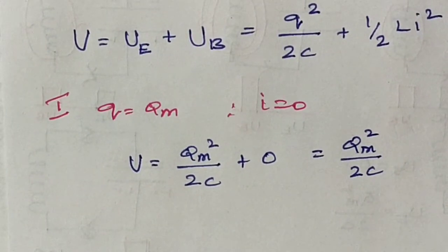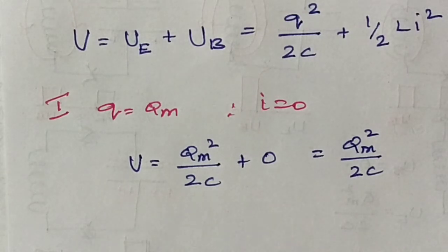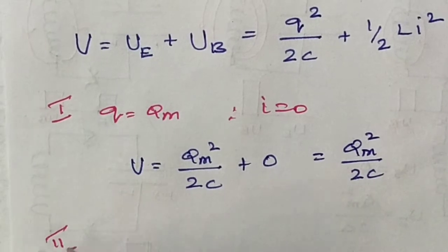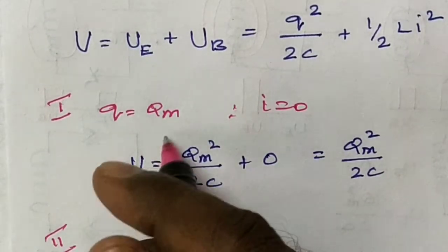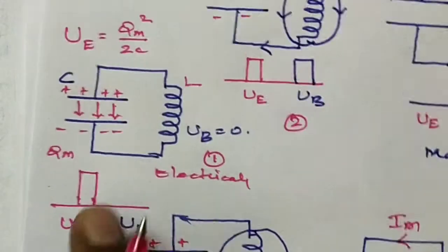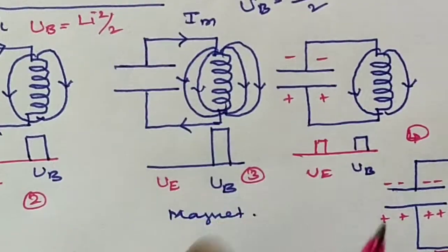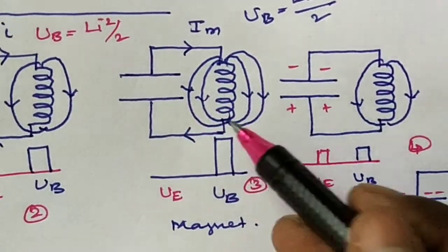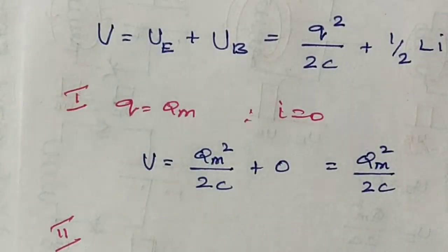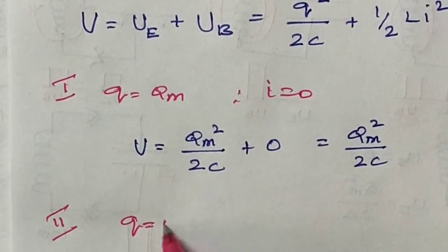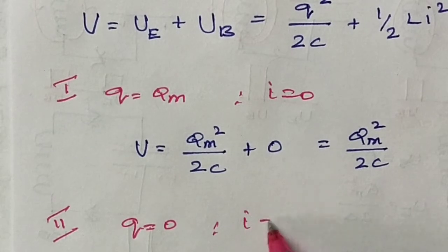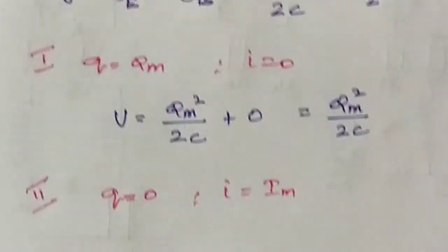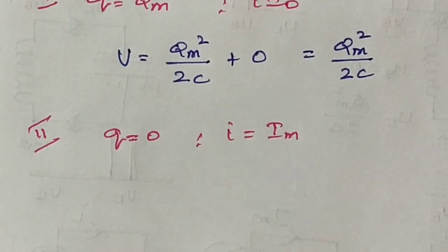The total energy in the first case is fully electrical. Moving to the second case: the capacitor is completely discharged, so there are no charges. But the current in the inductor is at its maximum value I_M. At that time, Q is zero but the inductor current equals I_M, the maximum current.